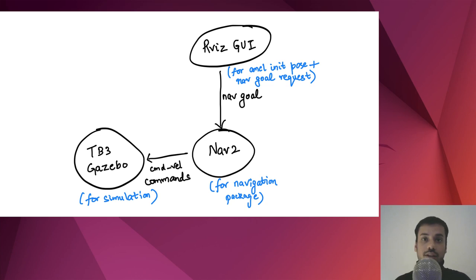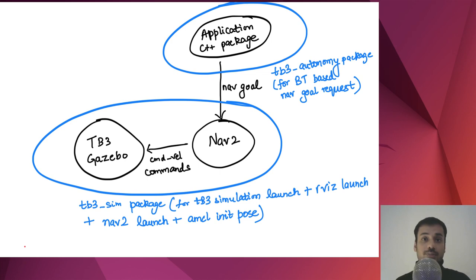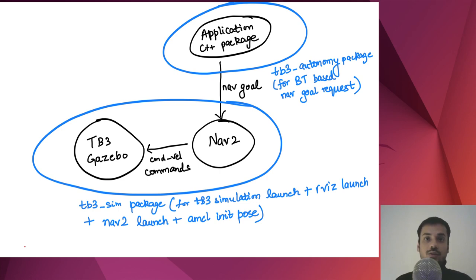Now we change this in this video. We would still have TurtleBot3 with the world in simulation in Gazebo. The second part is still nav2. But the third part is not Rviz GUI anymore — it's our own application code. In our application code we'll create a new package and we are supposed to ask Navigation 2 to move the robot to certain positions from code instead of using Rviz GUI.